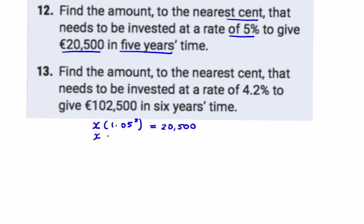So if we divide by 1.05 to the power of five, we get our answer. 20,500 divided by 1.05 to the power of five gives us €16,062.29 to the nearest cent.